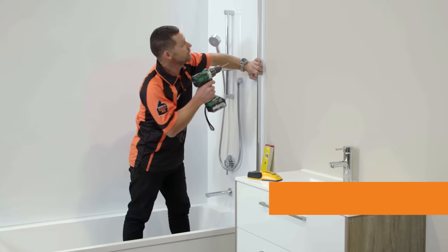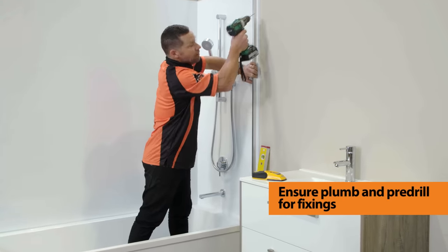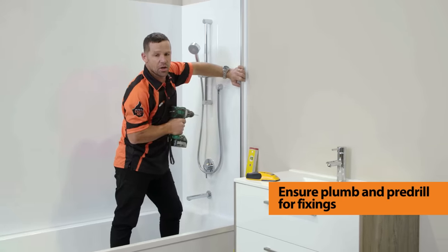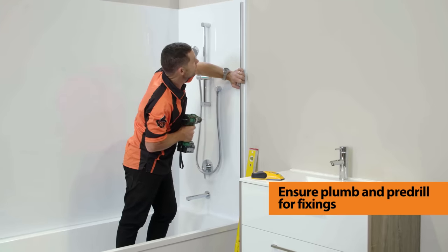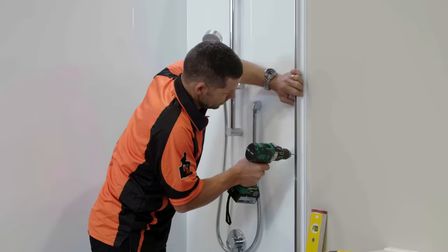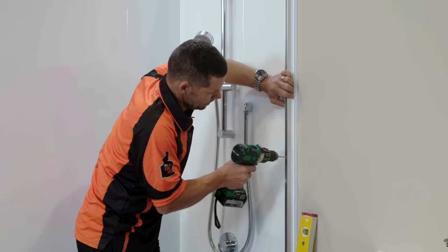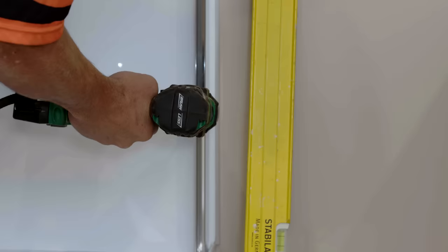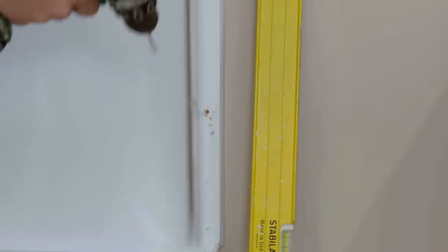Now I'm just going to pre-drill through the liner, and I'm just going parallel with the outside edge. I've already checked that the liner is plumb, so I know I'm good to go. Make sure you use the correct drill bit for the surface you're drilling into. If you've got tiles, use a piece of masking tape over the top of the tile to stop the drill bit from slipping.